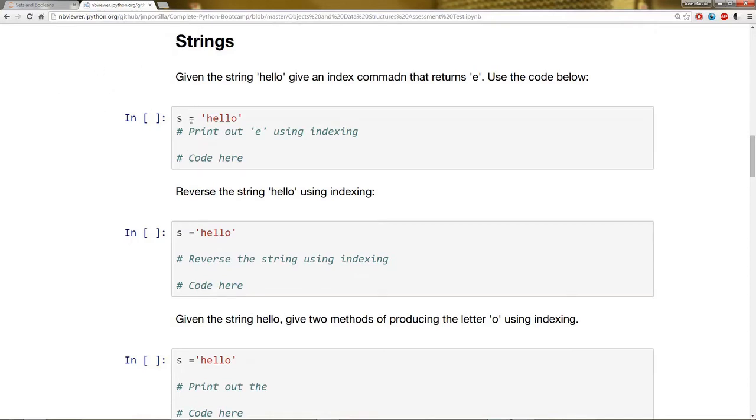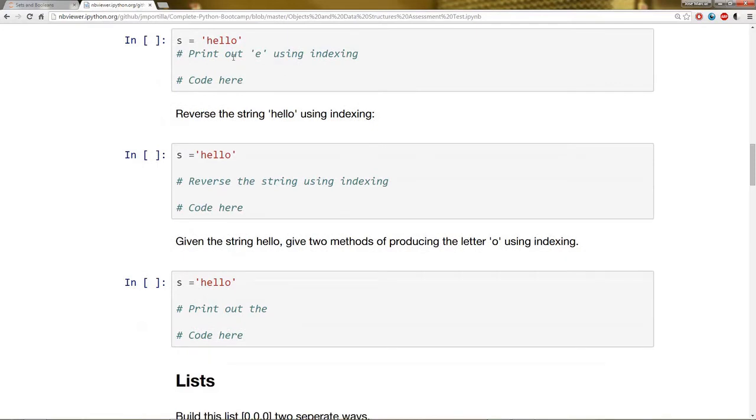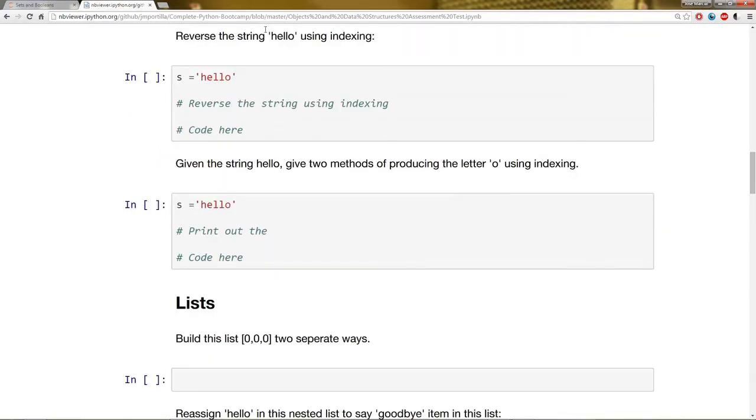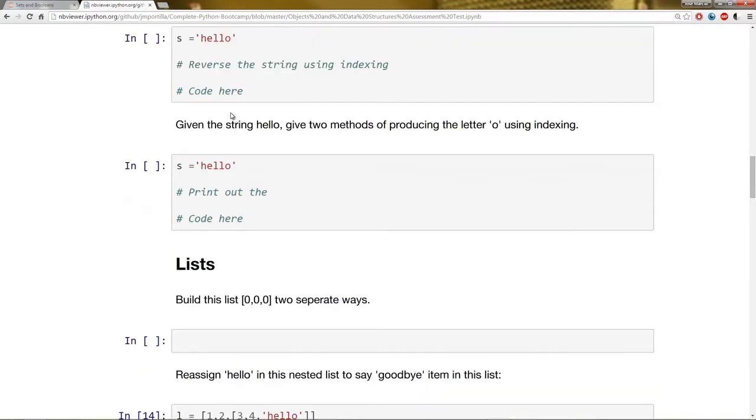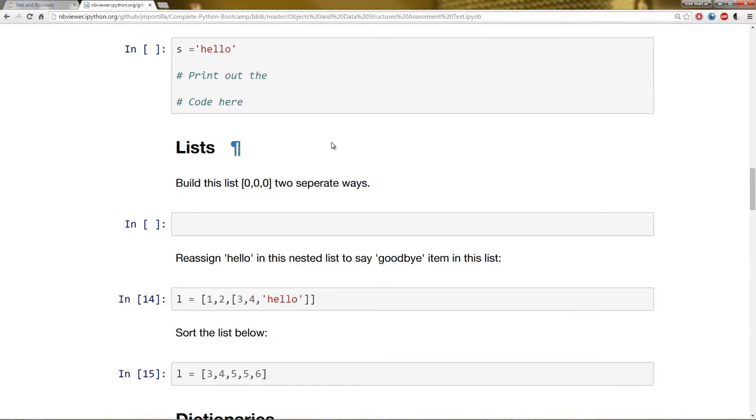Next section is going to be strings. Given the string hello, give an index command that returns e. Then I want you to reverse the string hello using indexing. And then again, given the string hello, I want you to give two methods of producing the letter o using indexing. So I expect you to be able to come up with at least two methods to produce just the letter o out of that hello string.